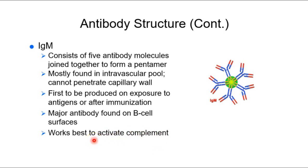IgM is also part of complement activation. The end result of complement activation is cell lysis — destruction of a pathogen — acting as a signal to invite other white blood cells to the area. We start our specific immunity cascade with complement activation, and we will revisit that concept.